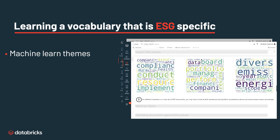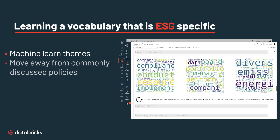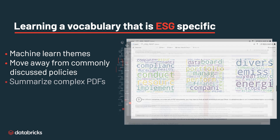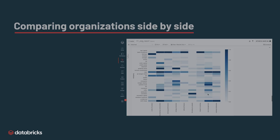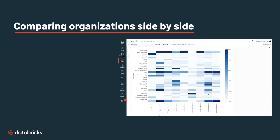Being able to machine-learn these themes moves us away from lengthy and verbose commonly discussed policies to machine-learned initiatives that help us summarize complex PDF documents into 24 machine-learning policies that we can compare. We can also compare organizations side-by-side based on how much they disclose in each of those categories.